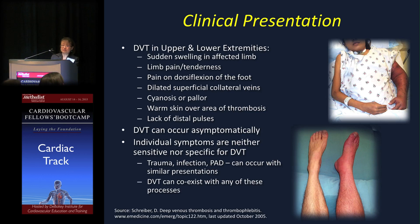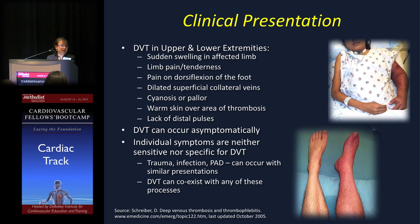How do DVTs present? You can see sudden swelling of the affected limb, pain and tenderness, dorsiflexion tenderness of the foot, dilated superficial collateral veins, cyanosis or pallor, and lack of distal pulses, warmth, or skin changes at the site of thrombosis. But diagnosing DVT is not easy — it's quite challenging. DVT can occur asymptomatically, and it can be superimposed on or occur with other conditions such as trauma, infection, and PAD.